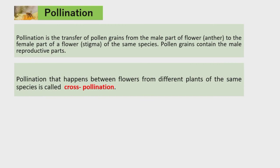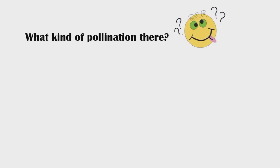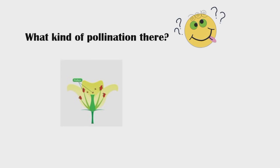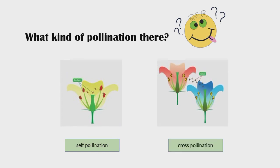Pollination that happens between flowers from different plants of the same species is called cross-pollination. Pollination that happens within the same flower or different flowers within the same plant is called self-pollination. Look at the pictures: the first is self-pollination, and the second is cross-pollination.